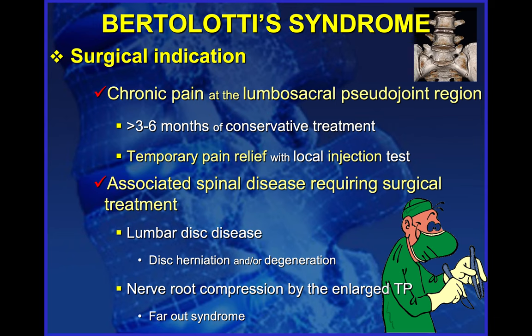The ideal candidate for surgery in Bertolotti's syndrome is the patient with typical lumbosacral pseudo-joint pain who does not respond to conservative measures and who has a temporary improvement after the injection inside the pseudo-joint. We must always pay attention to possible associated spinal disorders, especially lumbar disc disease, disc herniation, posterolateral or even far lateral disc herniation, disc degeneration, far-out syndrome — which is entrapment of the L5 nerve root caused by the enlarged transverse process of L5 — and other problems like scoliosis.